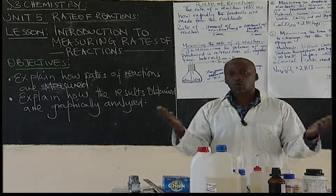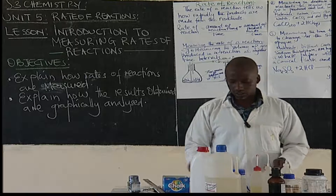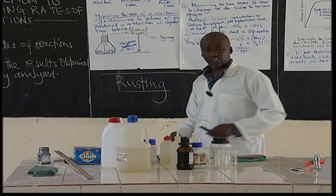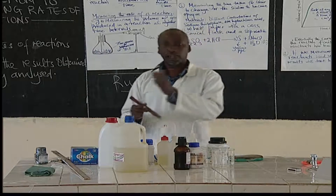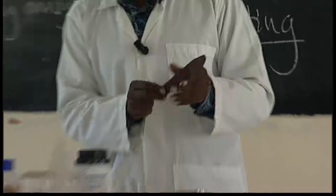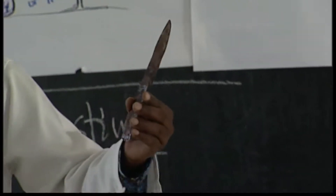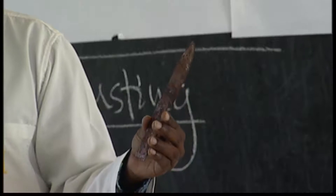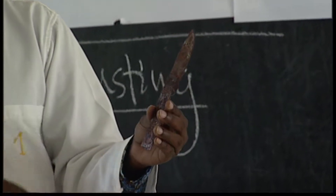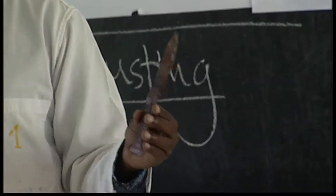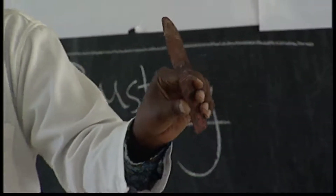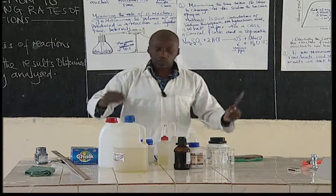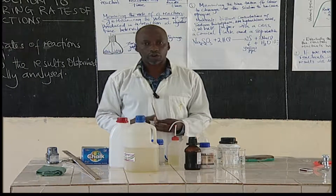Some reactions we encounter in everyday life take days to occur. An example of a slow reaction is rusting. This is a knife I just picked up outside — if you look at it, you can see it has changed color. Rusting destroys metals; it is the hydrated iron(III) oxide coating on the metal. Rusting takes place very slowly and is one of the reactions we encounter in everyday life.